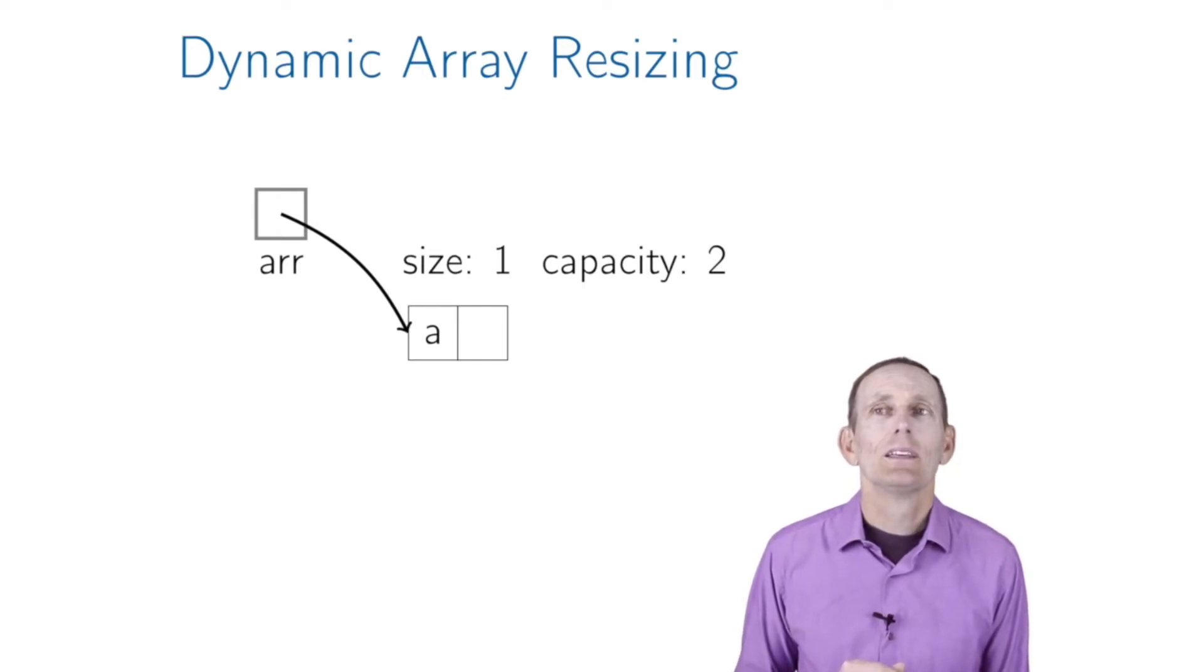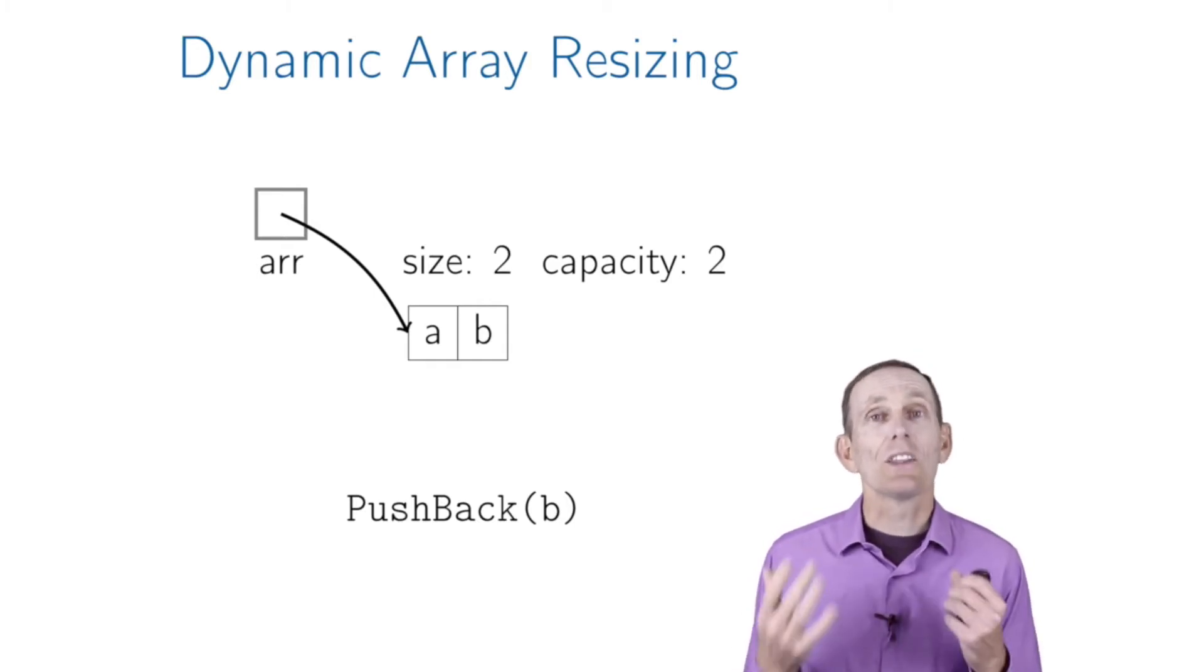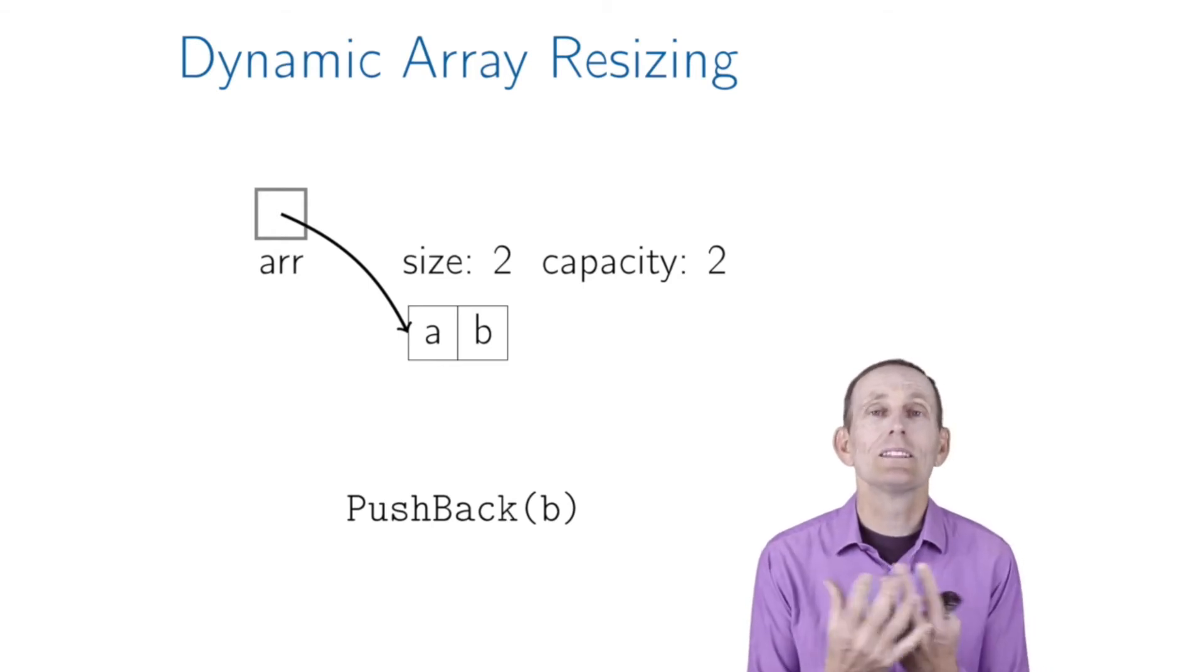We now push 'b' - it's going to put 'b' into the array and update the size. Notice now the size equals the capacity, which means this dynamically allocated array is full. So if we get asked to do another pushback, we've got to allocate a new dynamically allocated array.